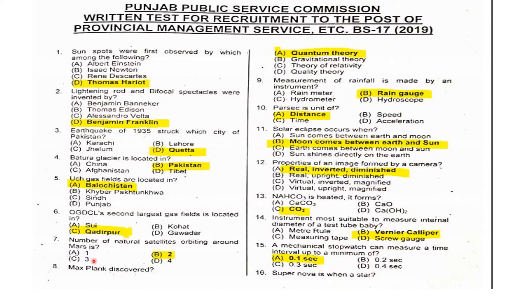Seventh MCQ: The number of natural satellites orbiting around Mars — how many natural satellites does Mars have? The answer is two.